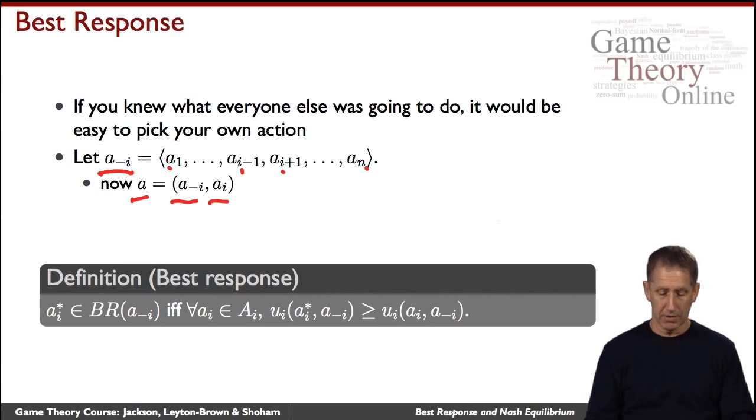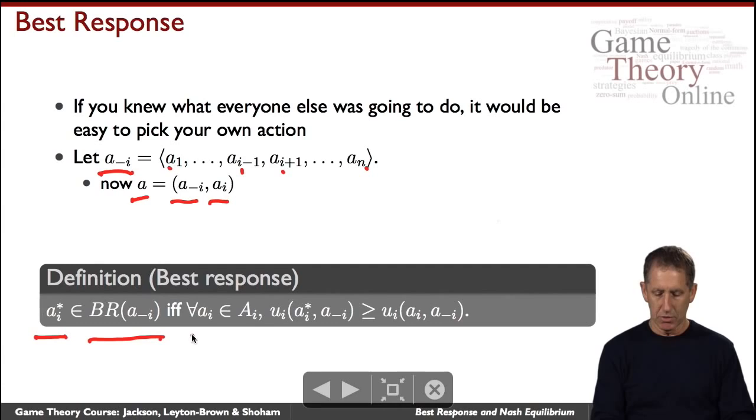With that notation, here's the definition. We will say that your best response, which we'll call a_i^*, it may not be unique but it's got to be part of the set that we'll call BR, the best response assuming that all the other agents play a_{-i}, if it's the case that for anything you might be thinking of doing, a_i, for all a_i,